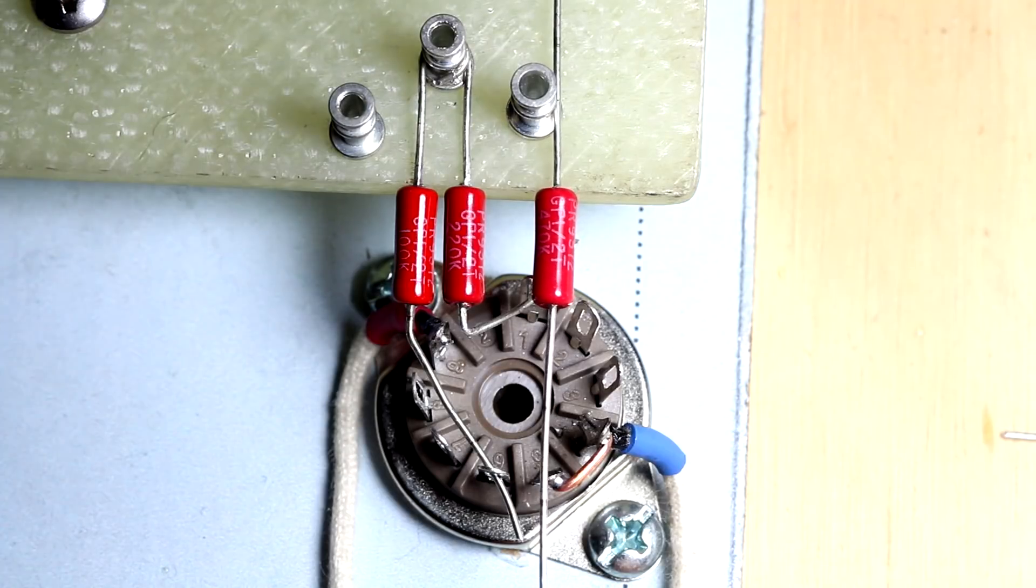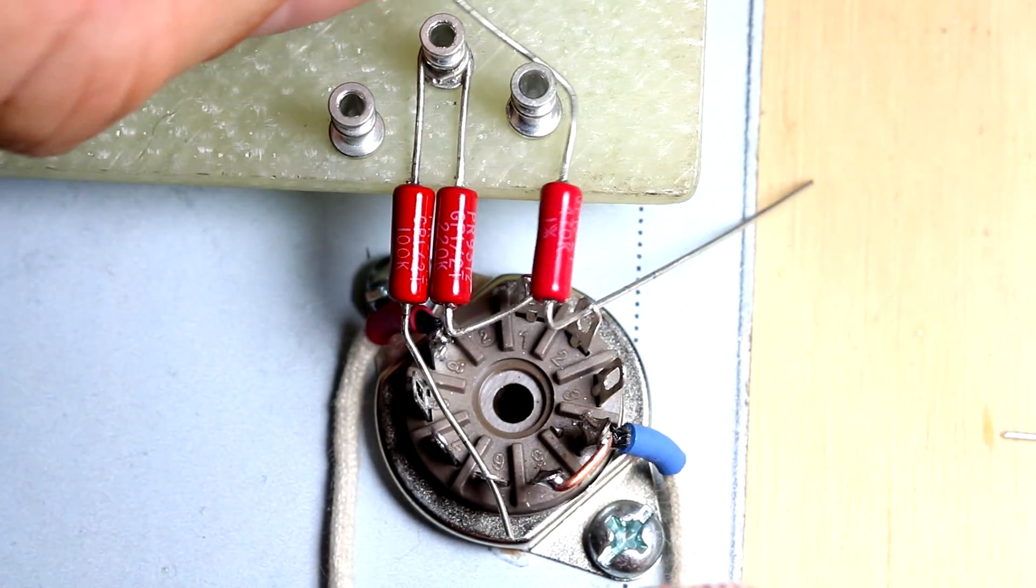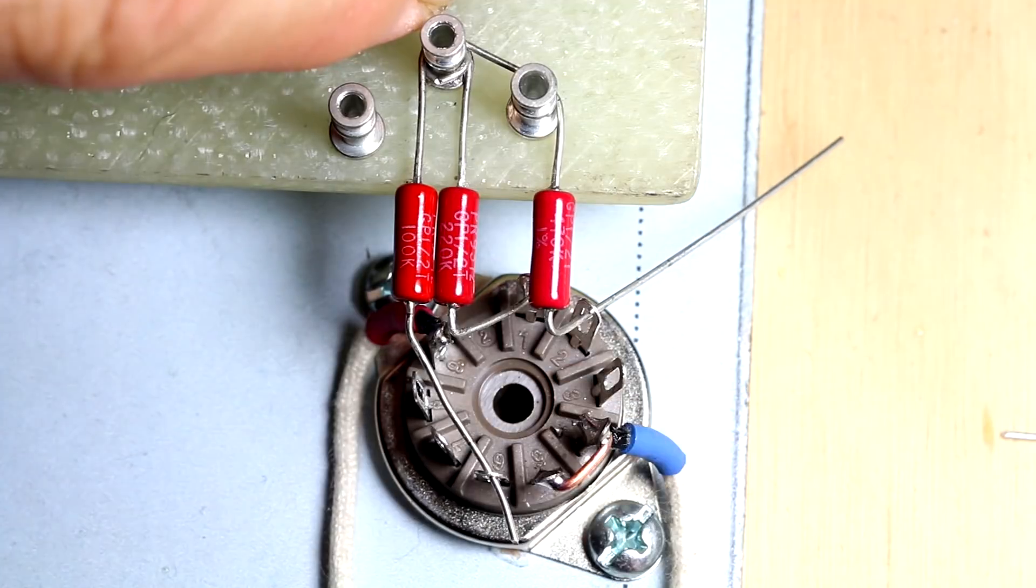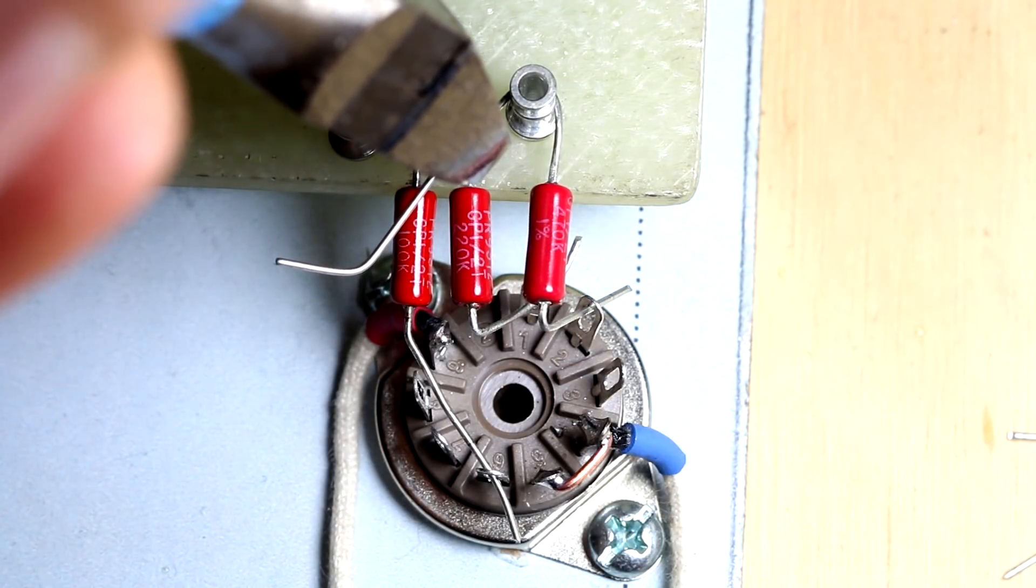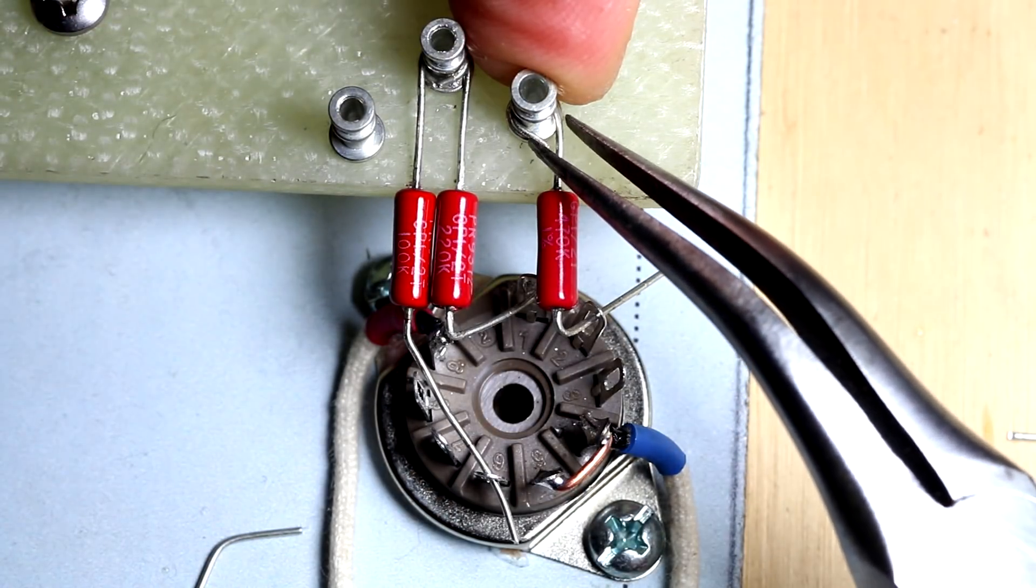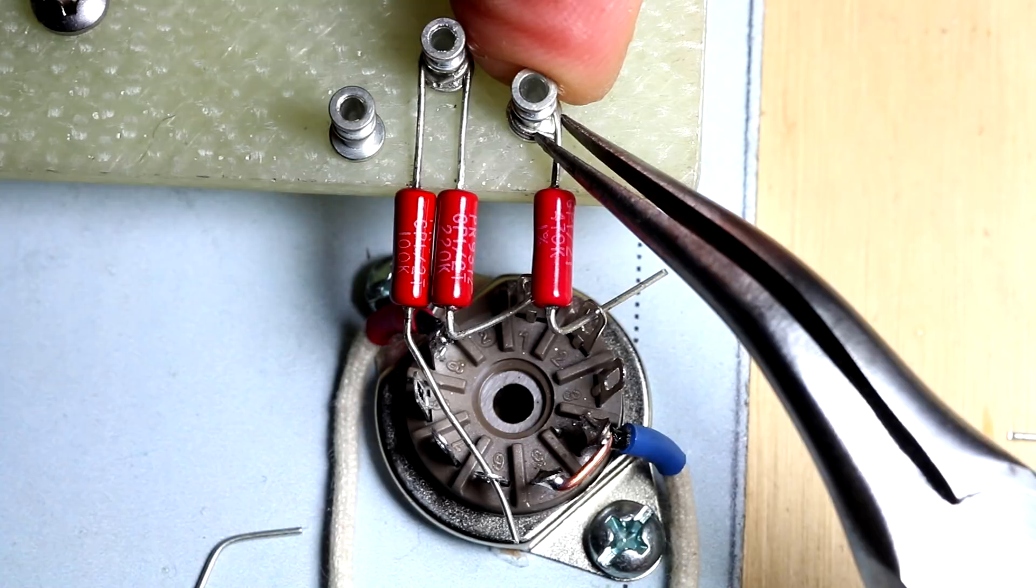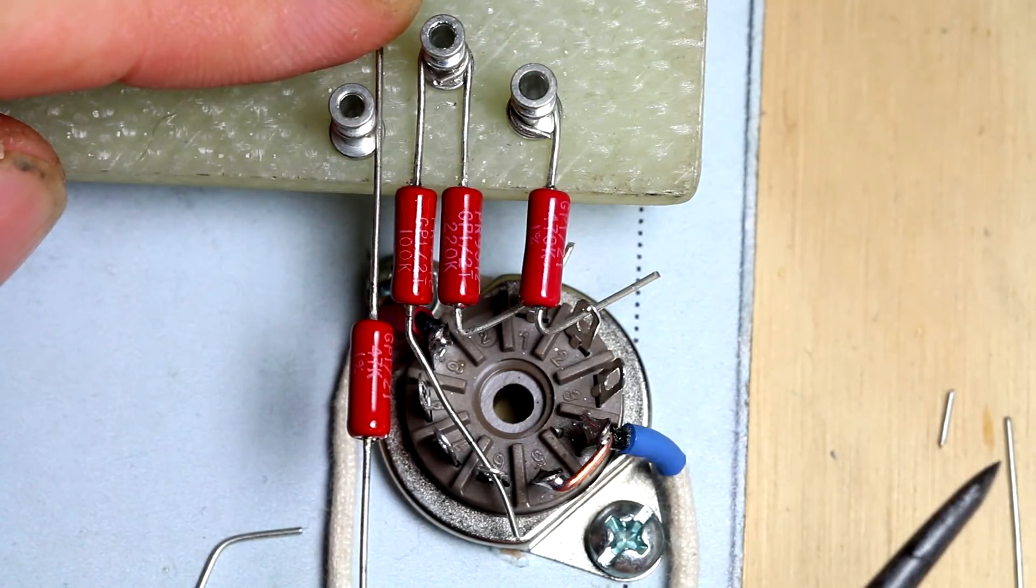And we'll do the same for pin number two. Pins number two and seven are the grids of the triodes. We'll always try to make the leads as short as possible going into the grid.